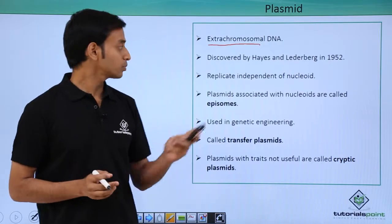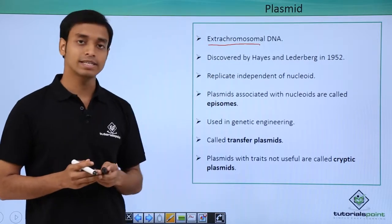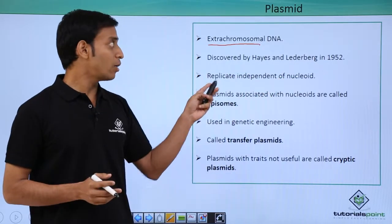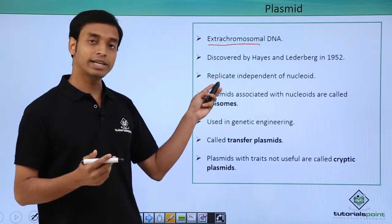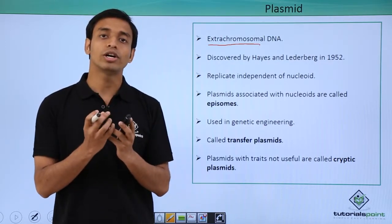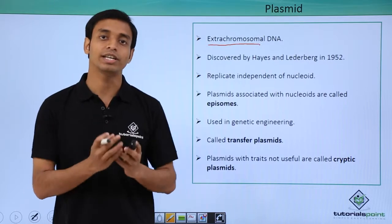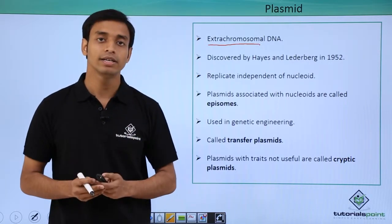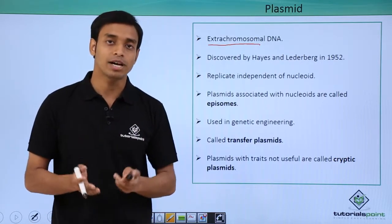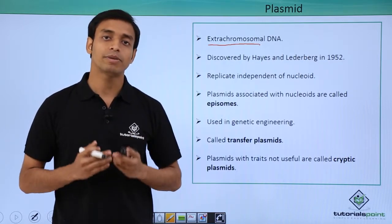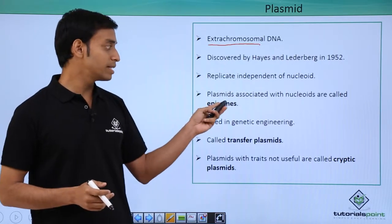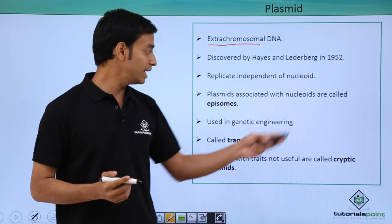Plasmids were discovered by two scientists named Hayes and Lederberg in the year 1952. Very importantly, plasmids can replicate independent of the nucleoid. When a cell is dividing, the genomic DNA has to be replicated, but plasmids have the capability for auto-replication — they can replicate on their own, independent of the nucleoid. If plasmids are associated with the nucleoid, these types of plasmids are known as epizomes.